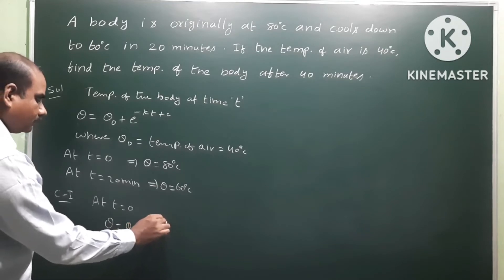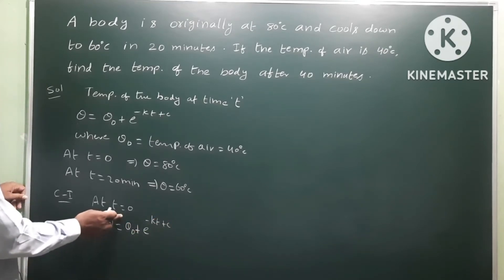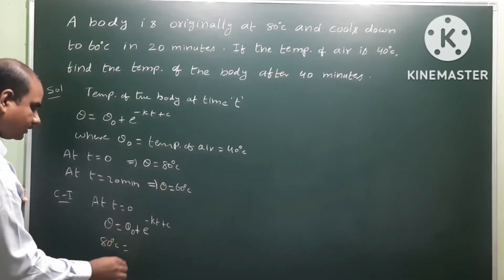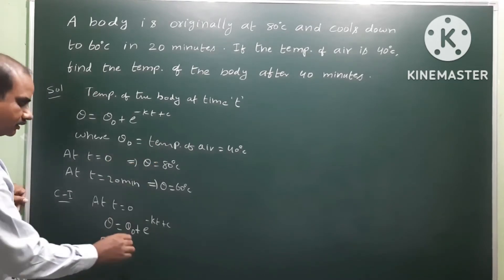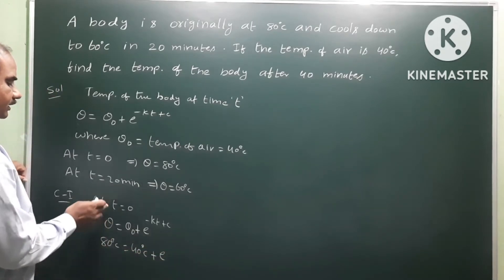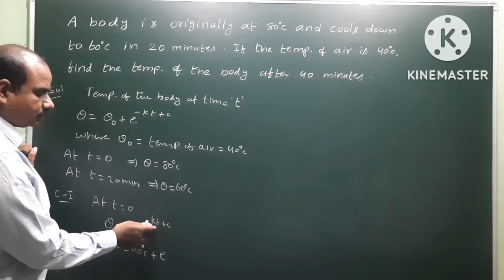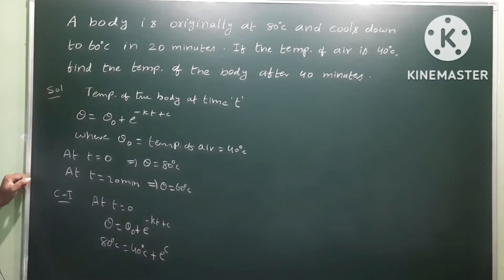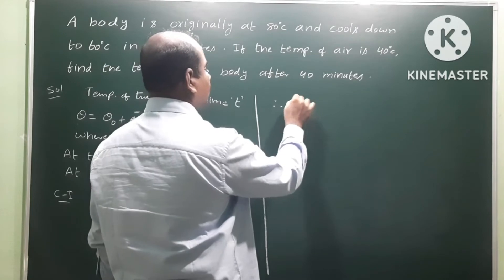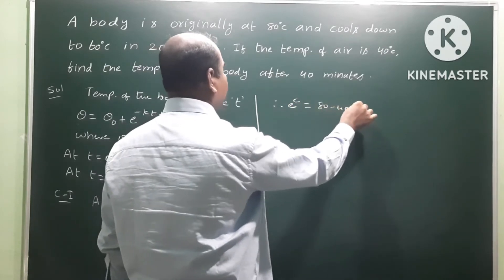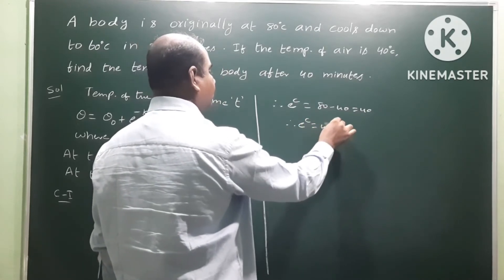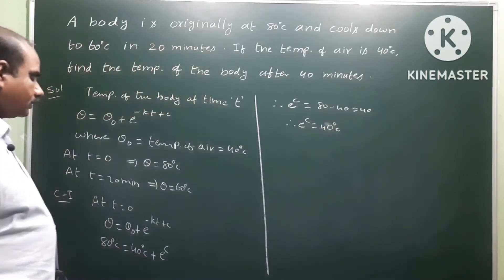At t equals zero, the initial temperature of the body is 80 degrees centigrade. Substituting into the formula, e power c is equal to 80 minus 40, therefore e power c is equal to 40 degrees centigrade.